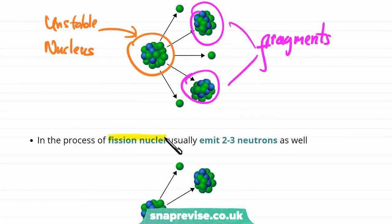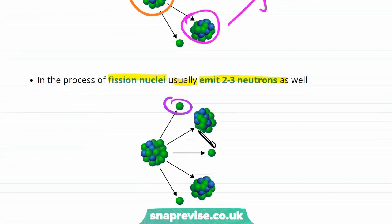In the process of fission, nuclei usually emit two to three neutrons as well. So here's those neutrons that have also been emitted.